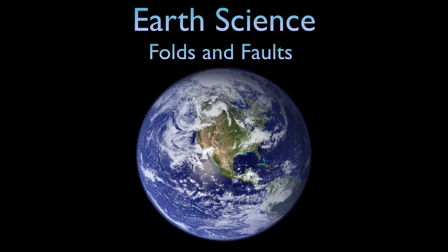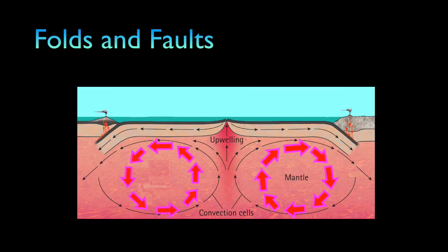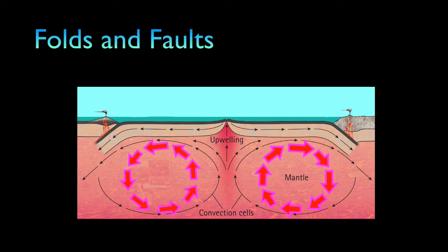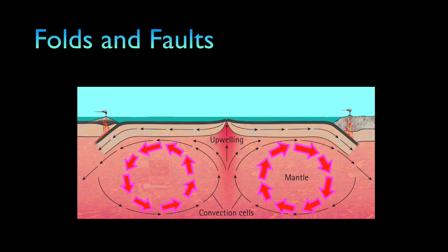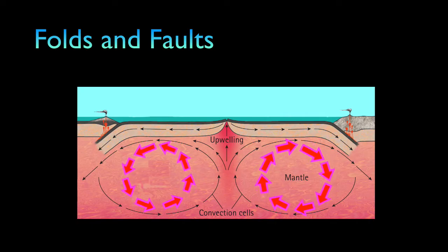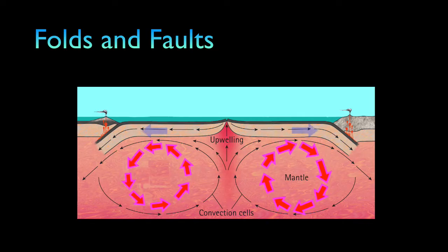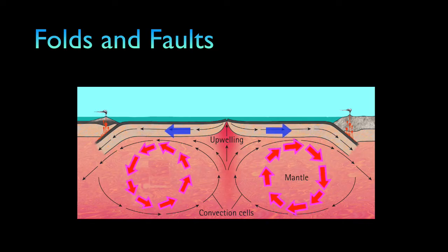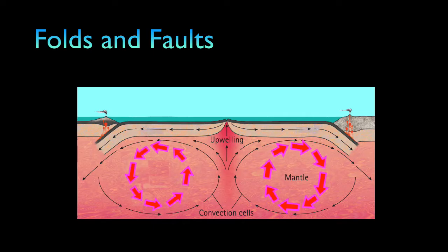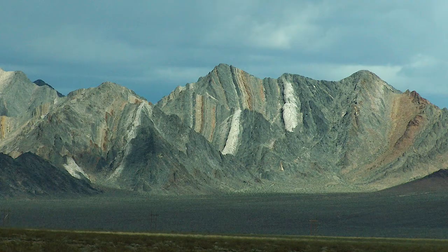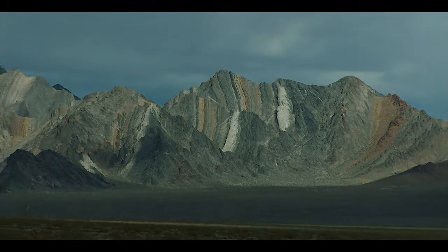Earth Science: Folds and Faults. What can we see on the Earth's surface that's a result of convection in the mantle? The flowing movements cause the lithosphere to be in constant but very slow motion. But slow over geologic time can cause large-scale and dramatic changes in the Earth's crust. Rocks in the crust that are under stress from the moving lithosphere can fold and break.